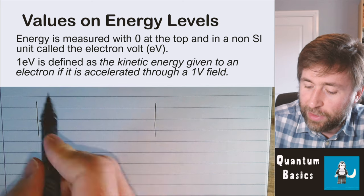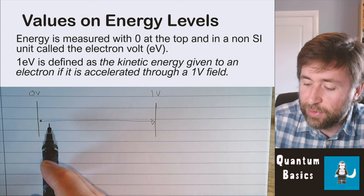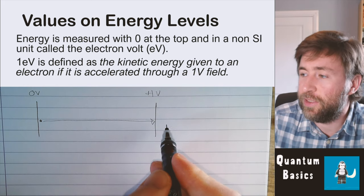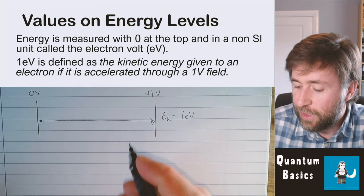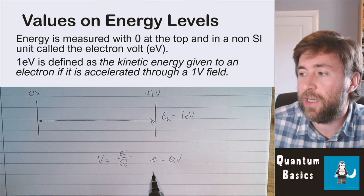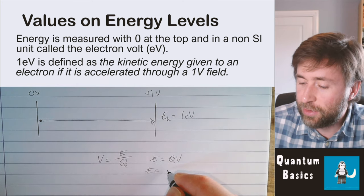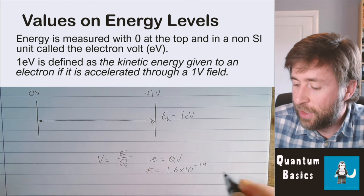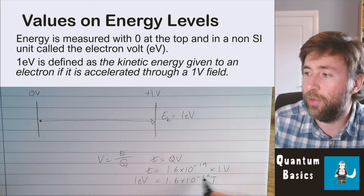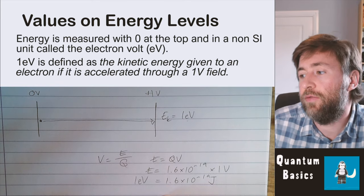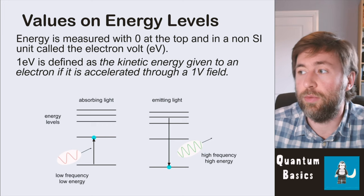If we have an electron with a potential difference of one volt — zero volts on one side and one volt on the other — that electron, as it reaches the positive end, would have kinetic energy equal to one electron volt. Using our equation for potential difference: energy equals charge times potential difference, QV. The charge of an electron is e, so one electron volt equals 1.6 times 10 to the minus 19 coulombs multiplied by one volt — giving 1.6 times 10 to the minus 19 joules. This is just a conversion factor for very small values of energy, used again in particle physics.